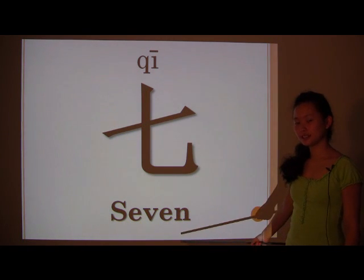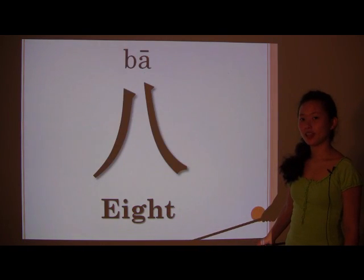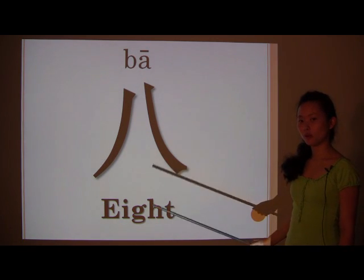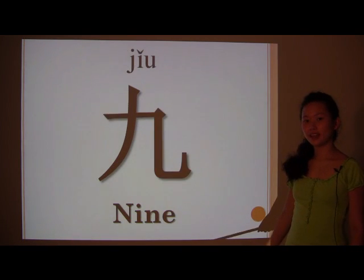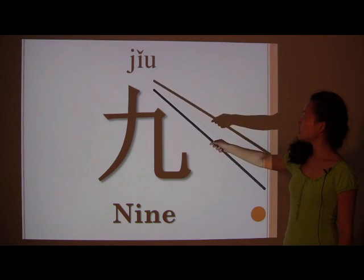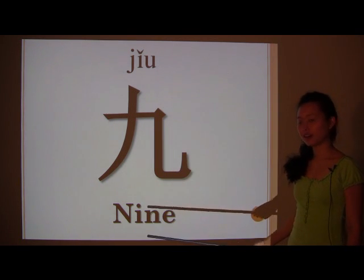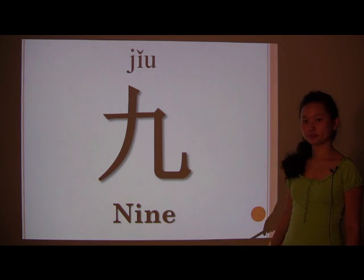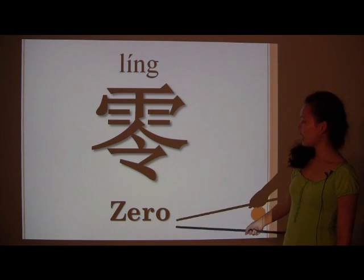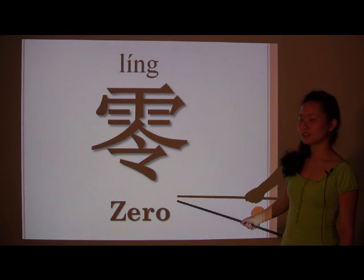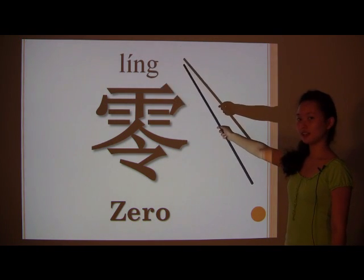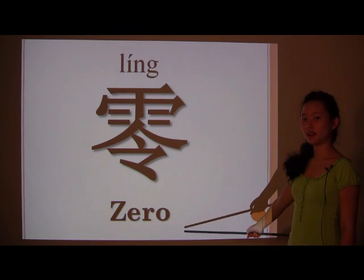8 is 八 (BĀ). And finally, 9 — 九 (JIǓ). 九 for 9. And 0 — zero looks really complicated, but we'll pronounce it LÍNG. LÍNG for 0.